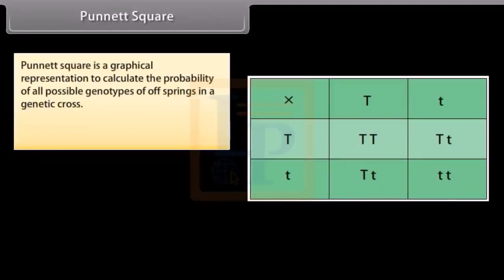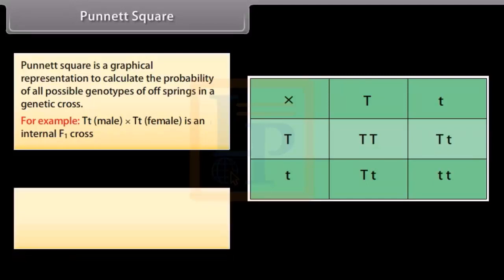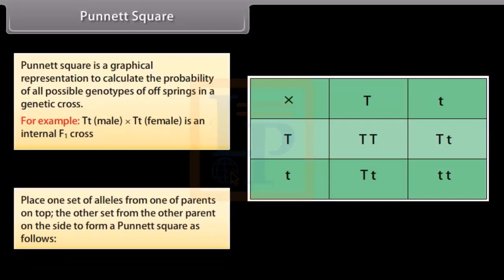Punnett square. Punnett square is a graphical representation to calculate the probability of all possible genotypes of offsprings in a genetic cross. For example, TT male cross TT female is an F1 cross. Place one set of alleles from one parent on top, the other set from the other parent on the side to form a Punnett square as follows.